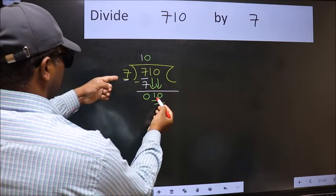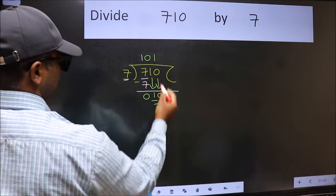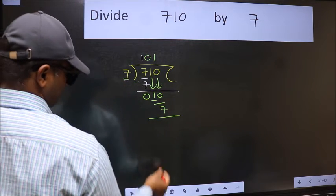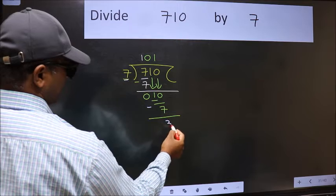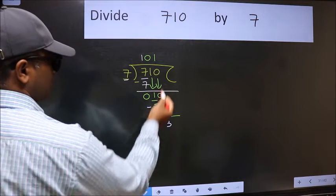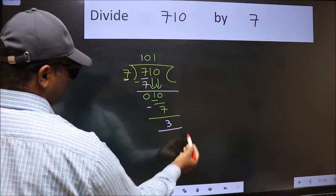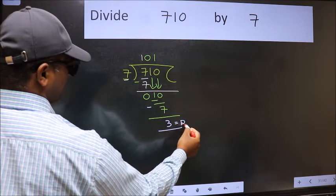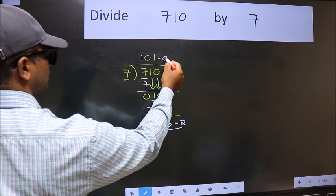A number close to 10 in the 7 table is 7 once, which is 7. Now we should subtract. We get 3. No more numbers to bring down, so we stop here. This is our remainder, and this is our quotient.